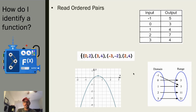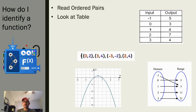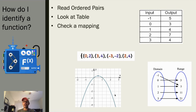We can identify a function from ordered pairs — checking that the x values don't repeat. We could look at a table, again making sure the x values don't repeat. So negative 1, 0, 1, 2, and 3 are all different, so this would be considered a function. If we're looking at a mapping diagram, we want to make sure that no x has more than one arrow coming off of it.